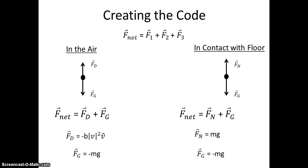When the ball hits the floor, however, another force is introduced. The normal force due to the floor acts on the ball when it hits the floor and acts in the opposite y direction as the force of gravity. The net force on the ball at this instant equals the normal force plus the force of gravity. The equations for these forces are shown.